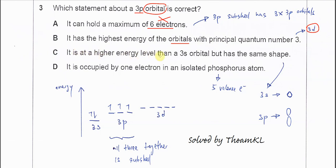C: it is at the higher energy level than 3s. This is true, but has the same shape? No. The s orbital is spherical, the p is two loops, so they are not the same. Not same shape.